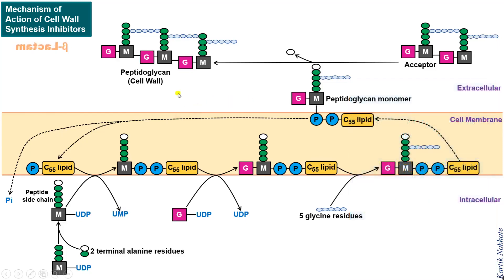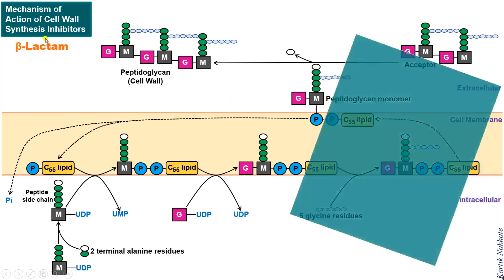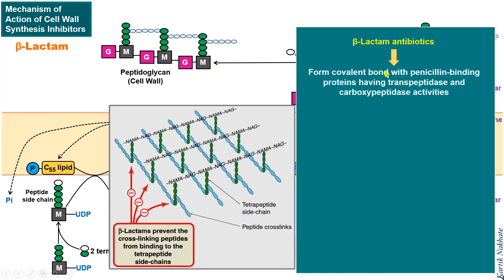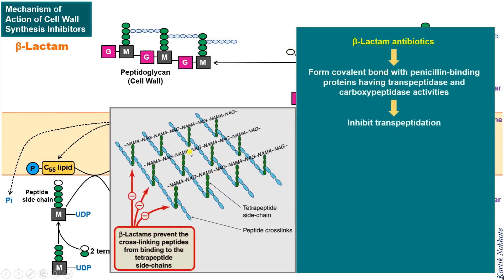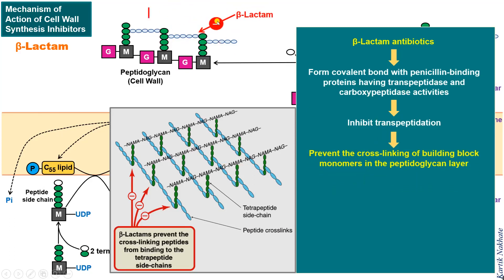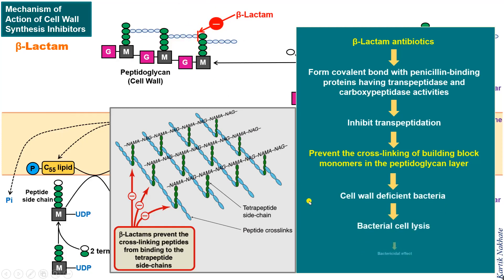The last antibiotic is the beta-lactam. Beta-lactam antibiotics form a covalent bond with penicillin binding proteins having transpeptidase and carboxypeptidase activities. This inhibits the process of transpeptidation. Inhibition of transpeptidation prevents the cross-linking of building block monomers in the peptidoglycan layer and ultimately results in the formation of a cell wall deficient bacterial cell.